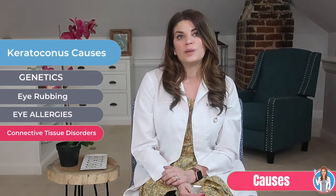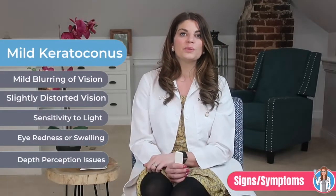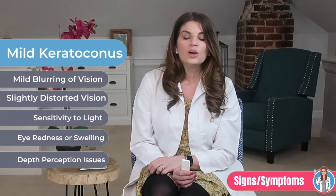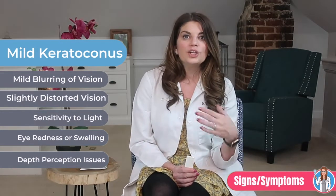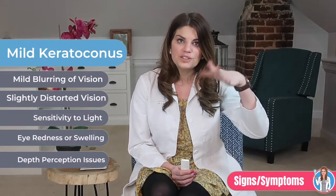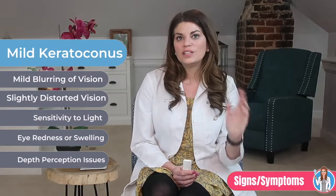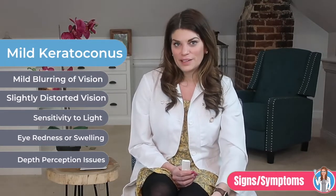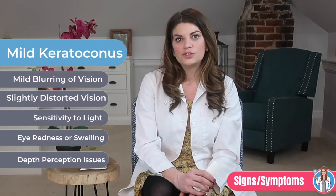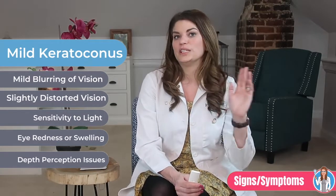Keratoconus often starts when people are in their late teens to early twenties and the vision symptoms slowly get worse over a period of about 10 to 20 years. It often affects both eyes and can lead to very different vision between the two eyes. In the early stage, symptoms can include mild blurring, slightly distorted vision where straight lines might look bent or wavy, double or triple images, light and glare, redness or swelling of the eyes, and even depth perception issues.